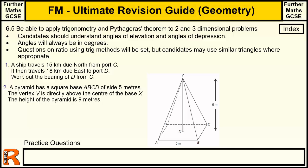6.5: Being able to apply trigonometry and Pythagoras' theorem to two- and three-dimensional problems. This is part of my ultimate revision guide for Further Maths GCSE, the geometry section. This index button here will take you back to the index for geometry, and any exam questions that I've covered on the Further Maths exams will go in this bar down here for you to practice with.